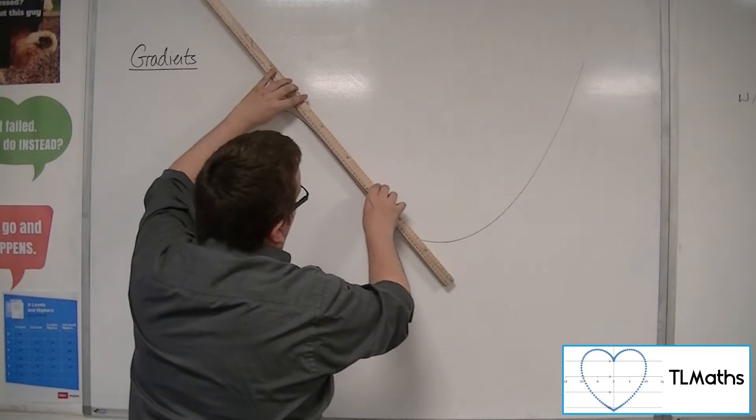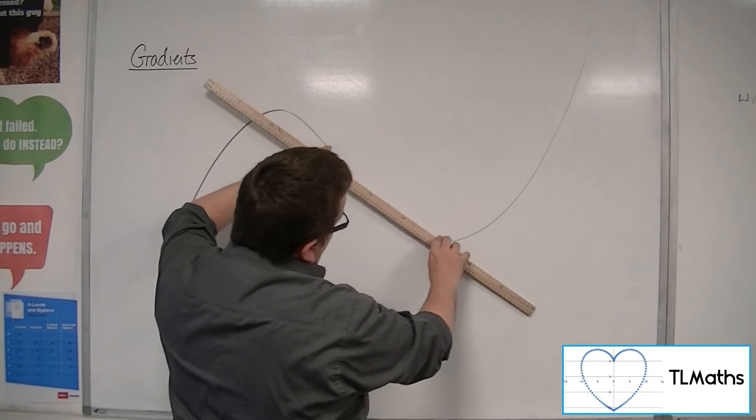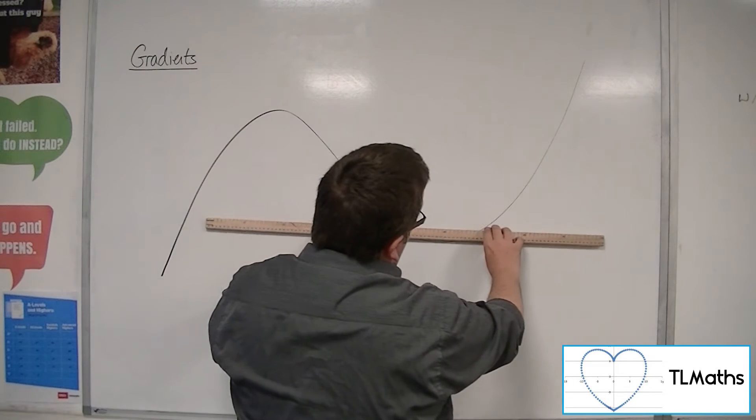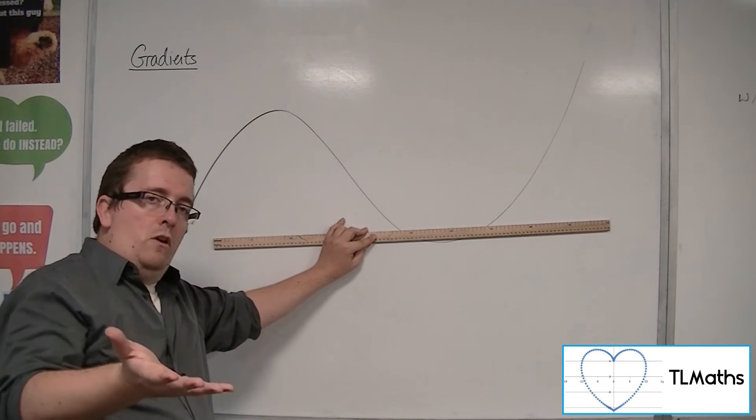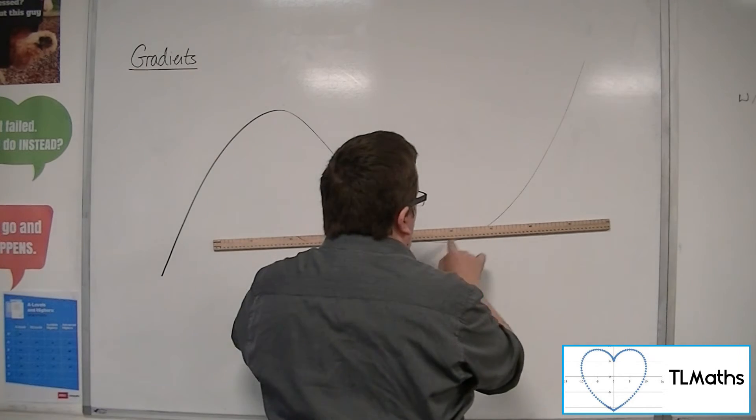And likewise, as I move down here, I've got negative gradient, negative, negative, negative, and then I get a gradient of, well, zero. There's this turning point.